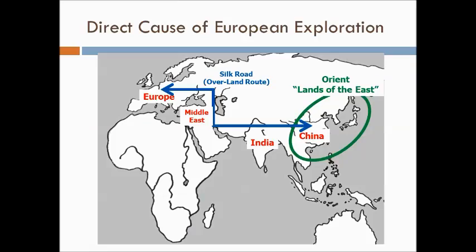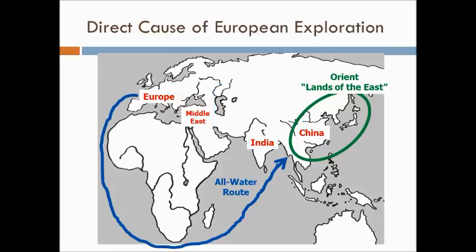The direct cause of European exploration was that Europeans wanted to find an all-water route to the Lands of the East — the Orient. The route they had was the Silk Road, which was long, dangerous, and expensive. So Europeans hoped to find an all-water route from Europe to China that would bypass the Middle East — and hopefully be quicker, cheaper, and less dangerous.